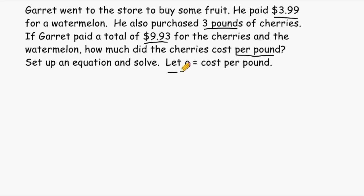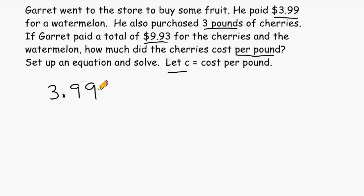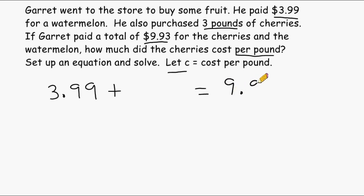Let C equal cost per pound. Now it is given in the problem that Garrett paid $3.99 for a watermelon, and we know that we are going to add that to the cost of the cherries to get a total amount of $9.93.